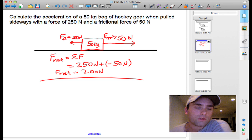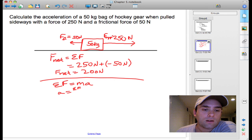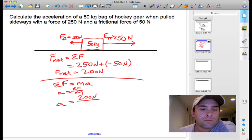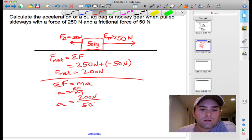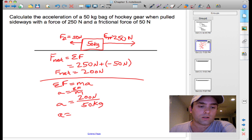Now we have the F net, we can use that in Newton's second law equation, the force mass acceleration equation, F net equals mass times acceleration, or that could be rewritten as acceleration is F net over mass. So simply put, the acceleration is 200 Newtons over the mass which is 50 kilograms.